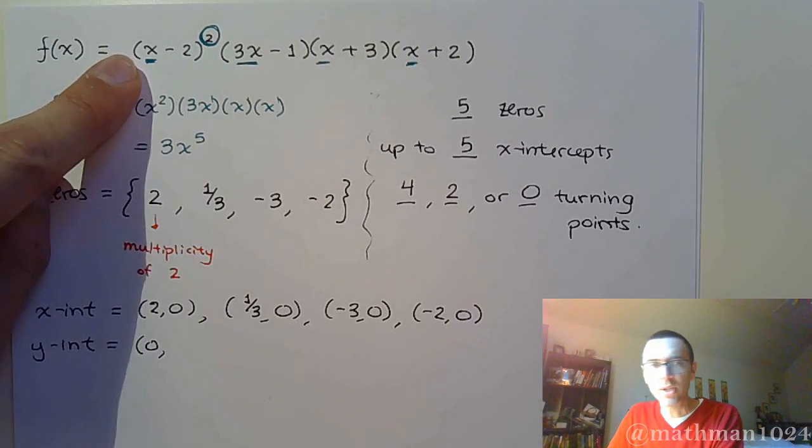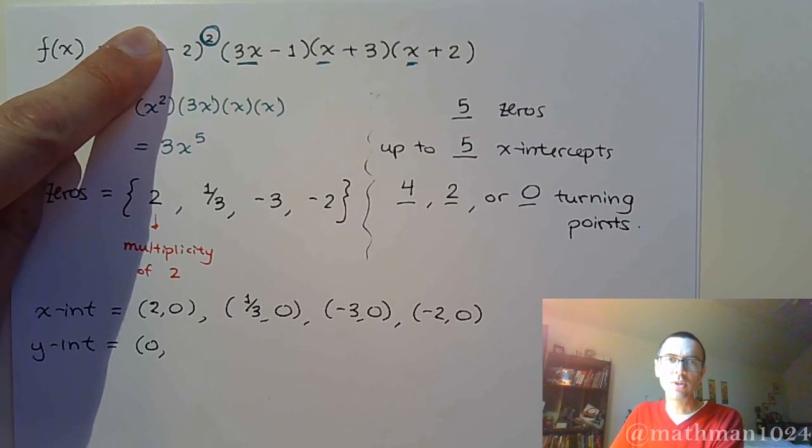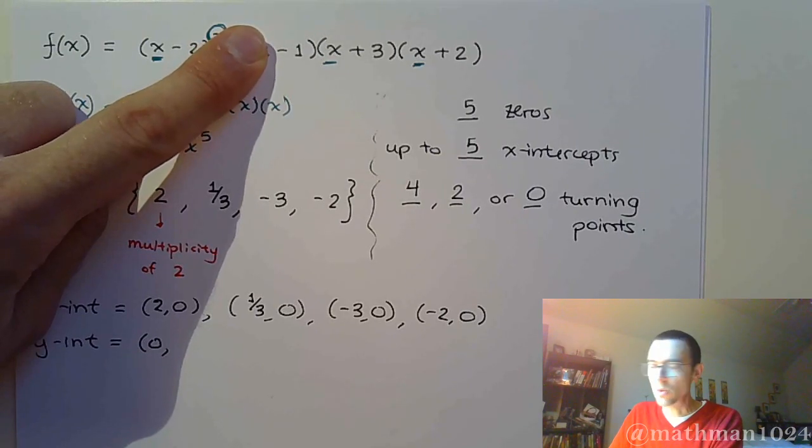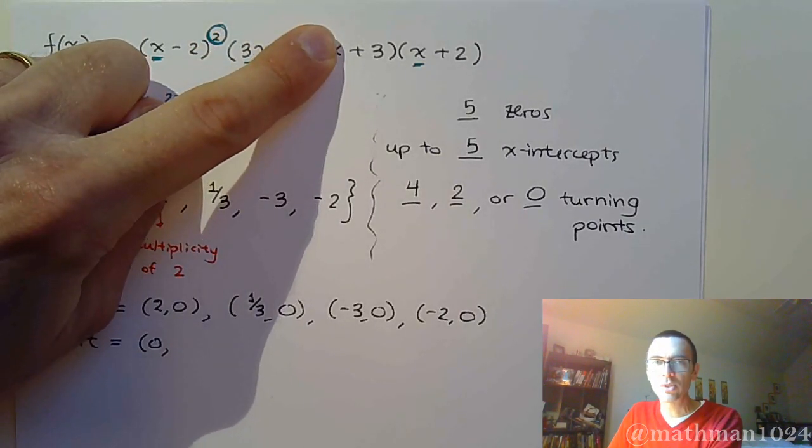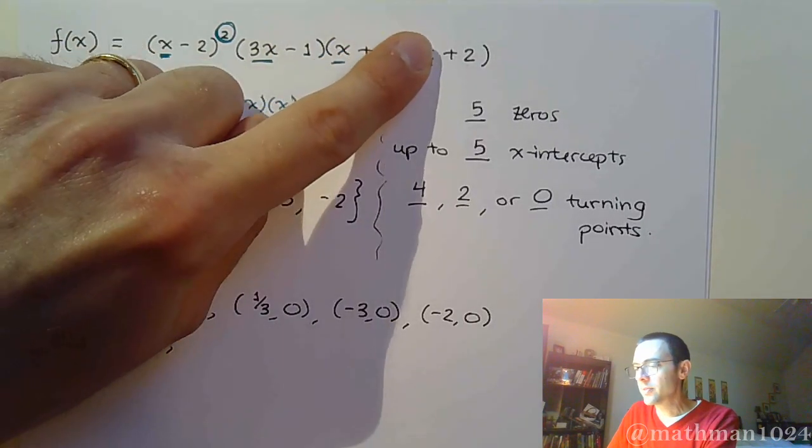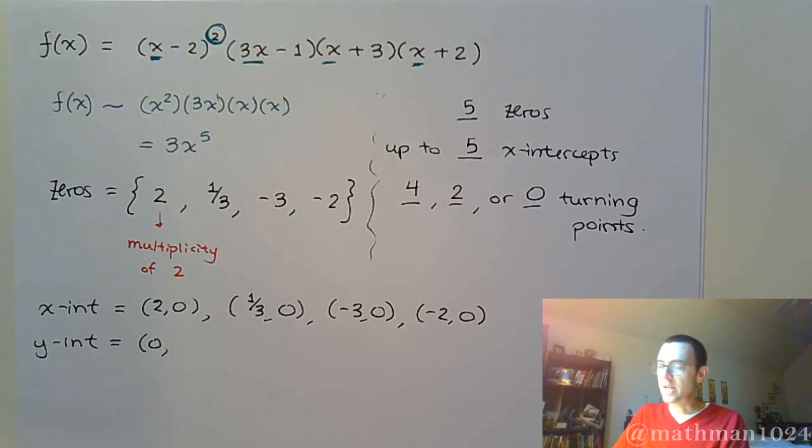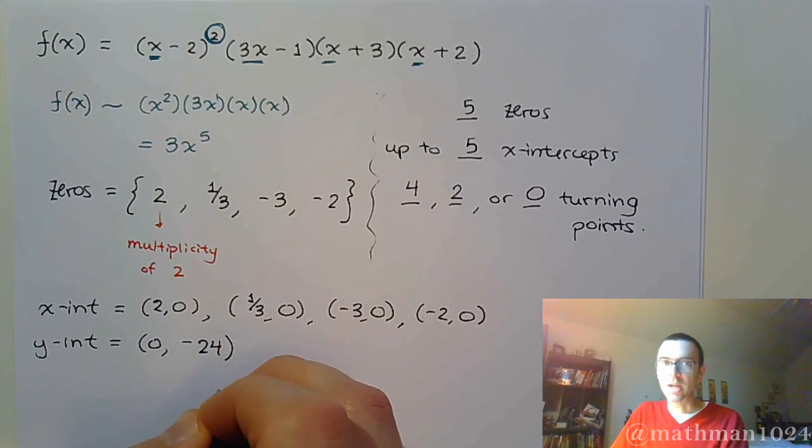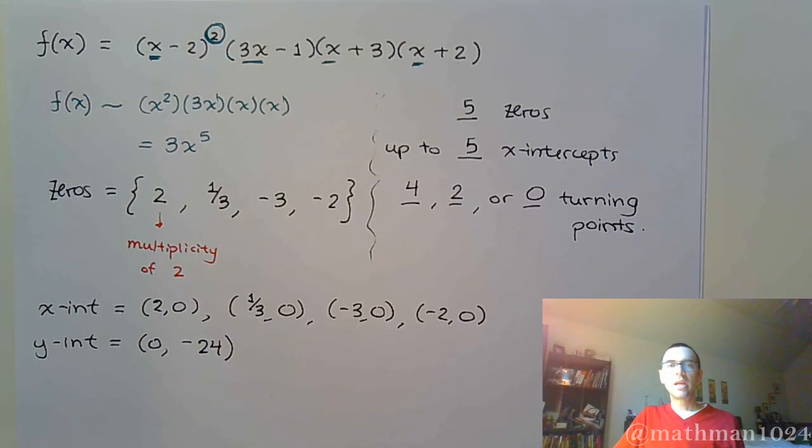If I plug in 0 here, I end up with negative 2 squared, so that's 4. 4 times 1 is negative 4, times 3 is negative 12, times 2 is negative 24. So by plugging in 0 into all those guys, and you see what you're left with, that's all going to multiply to give us negative 24.